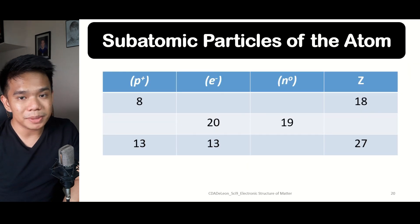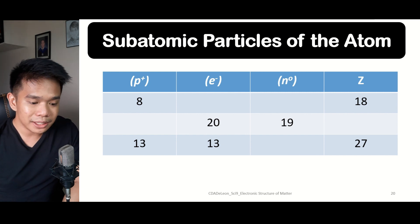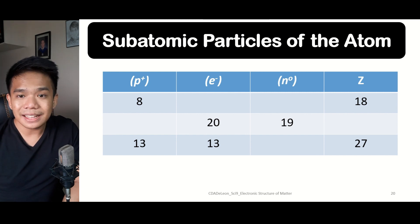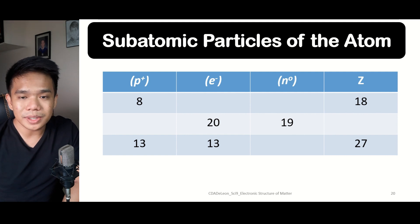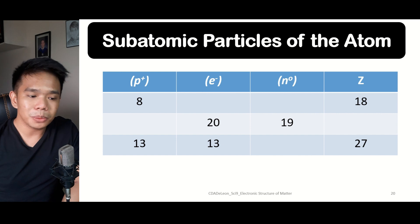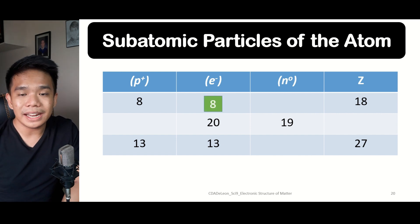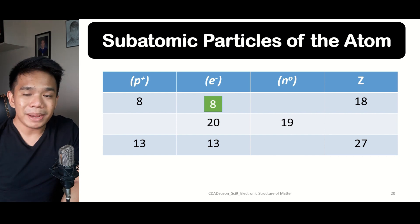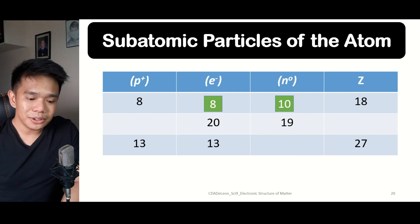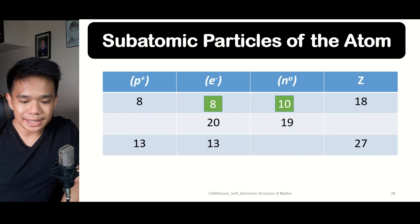Let's work through some examples with subatomic particles. In the first example, the number of protons is 8 and the atomic mass (A) is 18. Since the number of electrons equals the number of protons, the number of electrons is also 8. To find the number of neutrons, subtract the number of protons from the atomic mass: 18 minus 8 equals 10 neutrons.